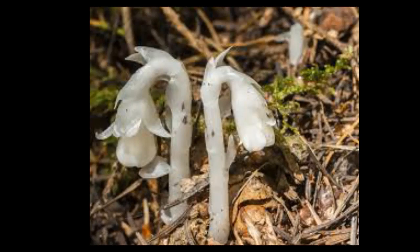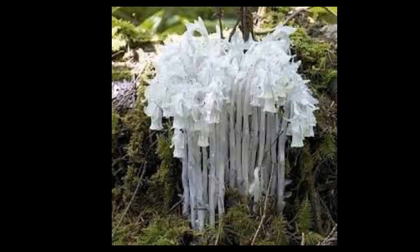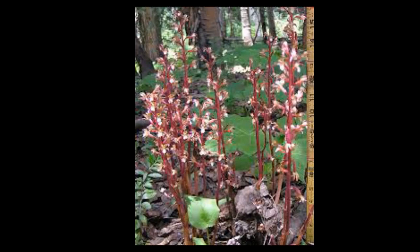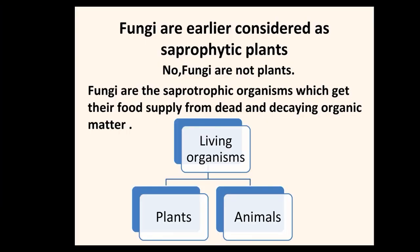Here you can see Indian pipe growing in shady areas on organic matter — they look very beautiful but are saprotrophic plants. Coral roots is another example, also growing in shady areas on dead and decaying organic matter. An important point to remember: fungi were earlier considered as saprophytic plants, but fungi are not plants — they are saprotrophic organisms.